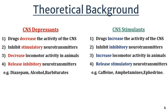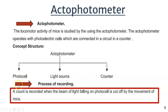For CNS stimulants, they release stimulatory neurotransmitters from the catecholamine nucleus, such as dopamine, whereas they also release the inhibited neurotransmitter GABA. Now let us discuss the instrument and the exact principle of the actophotometer.